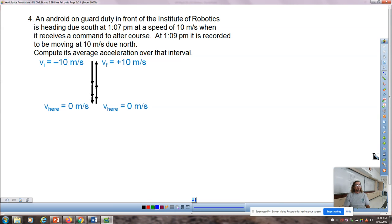Number four: an android on guard duty in front of the Institute of Robotics is heading due south at 1:07 at a speed of 10 when it receives a command to alter course. At 1:09, it is reported to be moving 10 meters per second due north. Compute its average acceleration. Some might think 10 minus 10 is zero, so there's no acceleration.